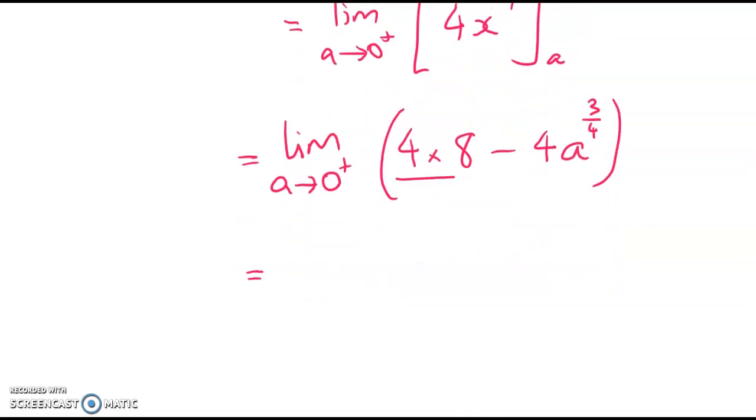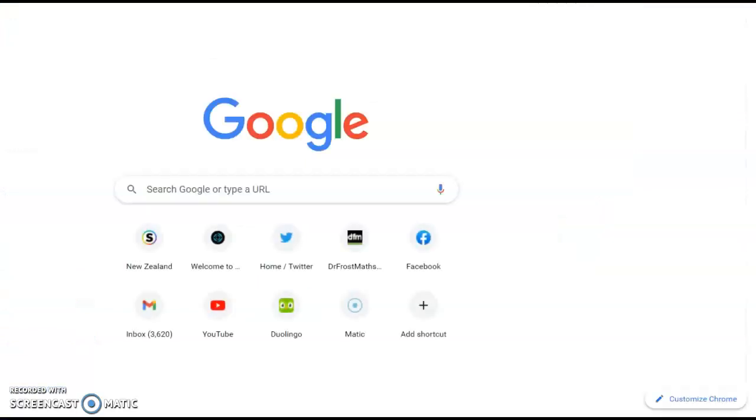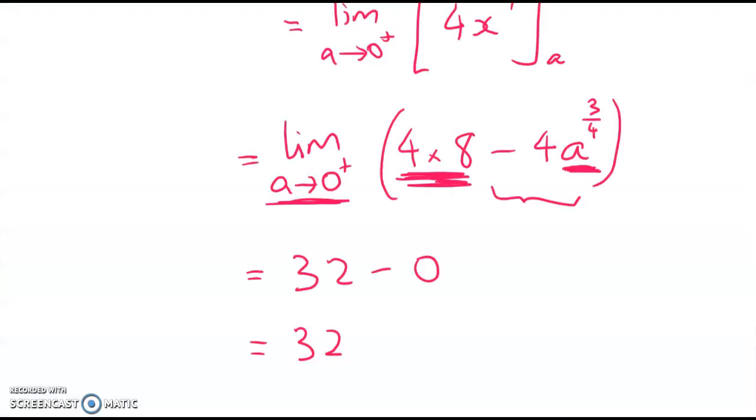Right now applying the limit operator. There is nothing to do with a in here so the first term is just 32. And what happens as a gets tiny is that a to the power of 3 quarters gets really really tiny and positive. So this last one here is 0. So the limit of that term is 0. So overall my area is going to be 32. Now for this one I want to hop over to Geogebra hopefully and show you with a slider what's going on. Not going to work. Hang on a sec. I'll just go back and pause the recording to stop.